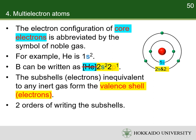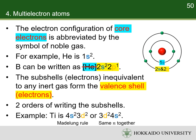For a given electron configuration, there are two orders of writing the subshells. The first notation follows the order based on the Madelung rule. The second notation groups all orbitals in a shell together. For example, the electron configuration of the titanium ground state can be written as either 4s²3d² or 3d²4s².